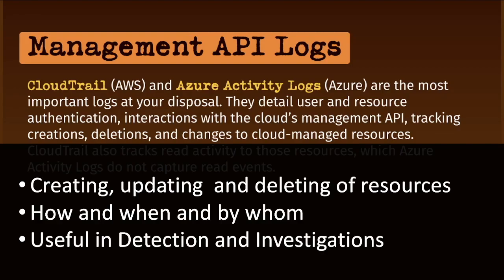Not only the activity that has happened, but who did it — or at least who the cloud thinks has done it — when it was done, IP addresses, and what were the permissions or the role that was used to perform those activities. These management API logs are the most important and most used when you're doing detections and investigations.